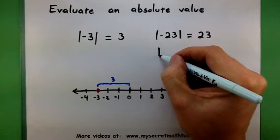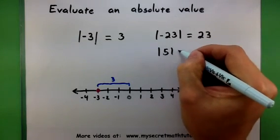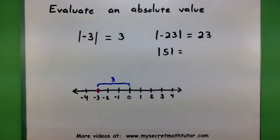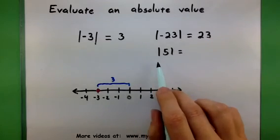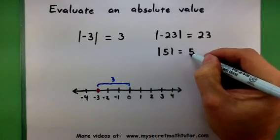If you happen to have a number that is already positive, no problem. Just keep it positive. So the absolute value of 5 is 5.